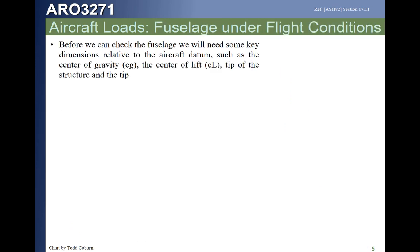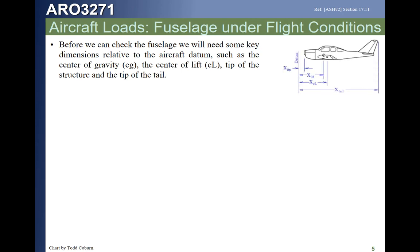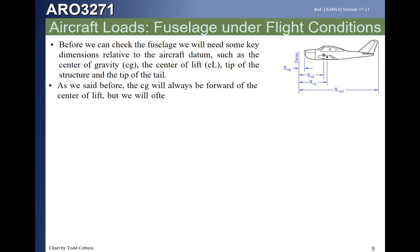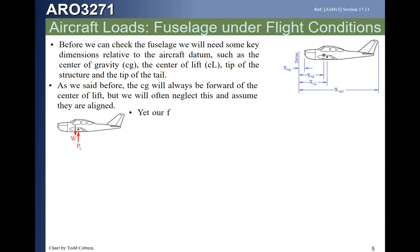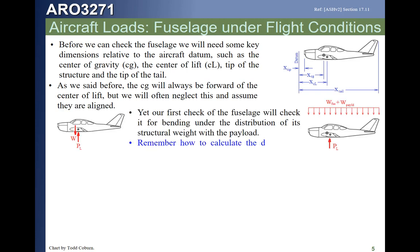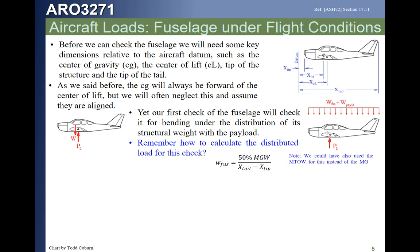For the flight analysis, we take a similar but slightly different approach using the same dimensions. The CG is forward of the center of lift, but we neglect that difference. We take the max gross weight, take 50% of that (25% fuselage + 25% payload), divide by the total length — X_tail minus X_tip — to get the distributed load. This time, it's all reacted by the center of lift, giving us 50% of the max gross weight loaded from tip to tail.